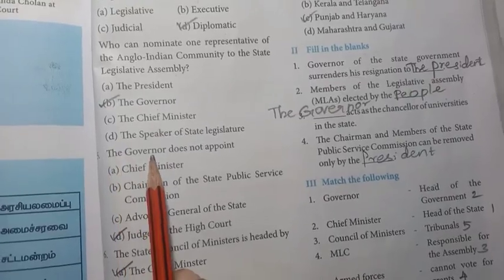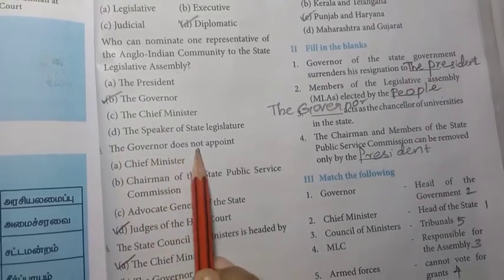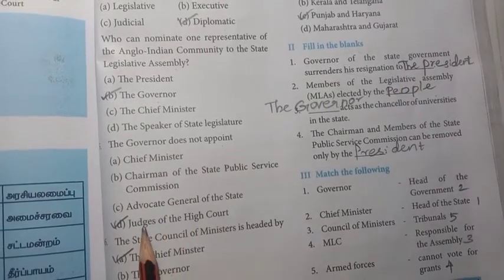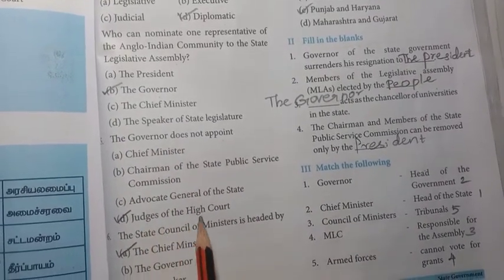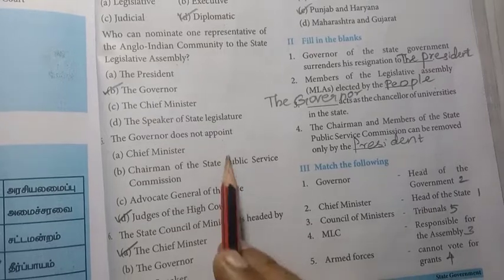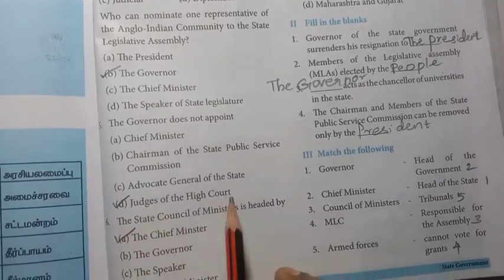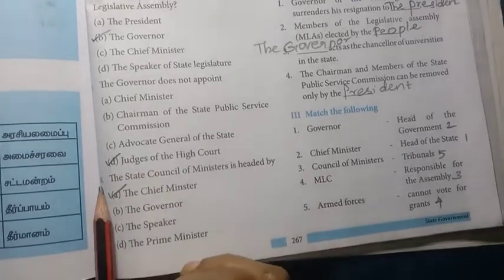Number five: the governor does not appoint judges of the high court – D option, judges of the high court.